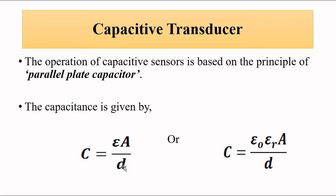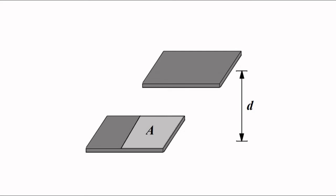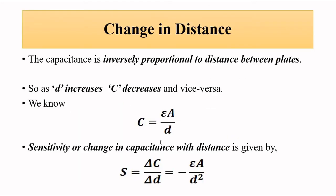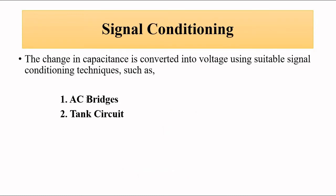The change in capacitance depends on the liquid level in the container. Capacitance is inversely proportional to distance between the plates — as d increases, capacitance decreases and vice versa. Capacitance is directly proportional to overlapping area. This change in capacitance can be converted into a suitable voltage or current signal using signal conditioning techniques such as AC bridges or a tank circuit.